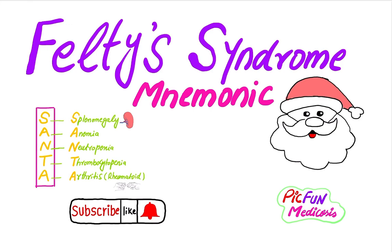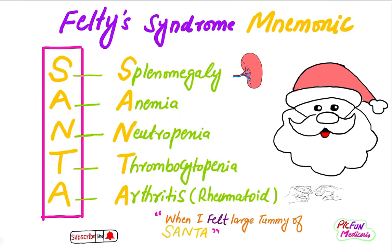Today we'll easily remember the components of Felty's syndrome. Felty's syndrome has the following components: splenomegaly, anemia, neutropenia, thrombocytopenia, and arthritis. If a patient presents with splenomegaly, anemia, neutropenia, and arthritis, then the diagnosis will be Felty's syndrome.